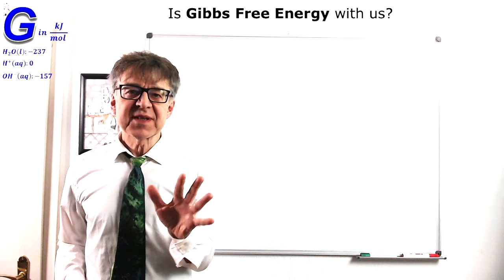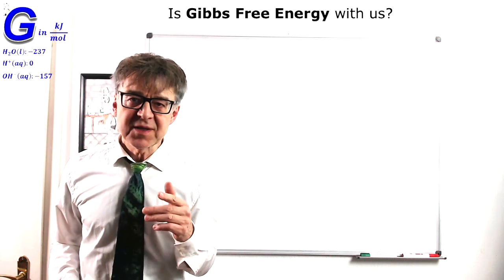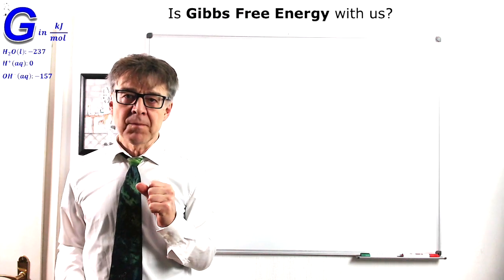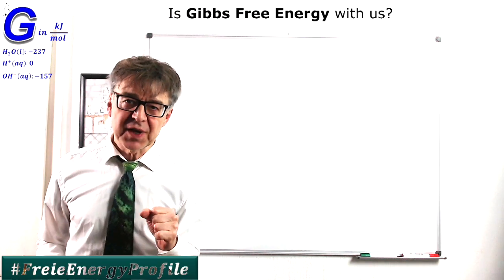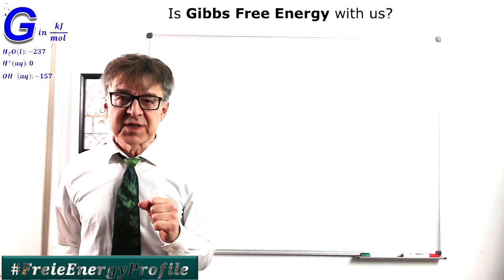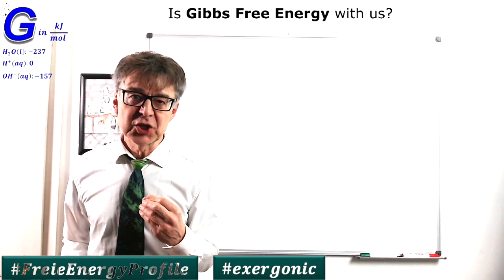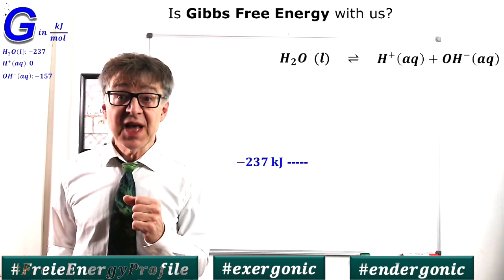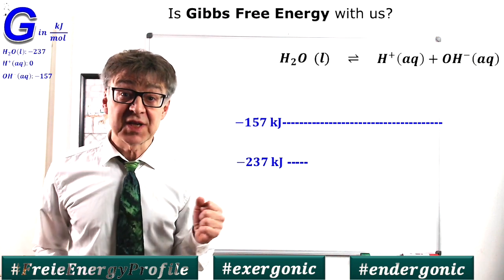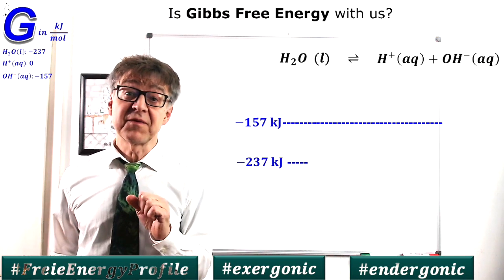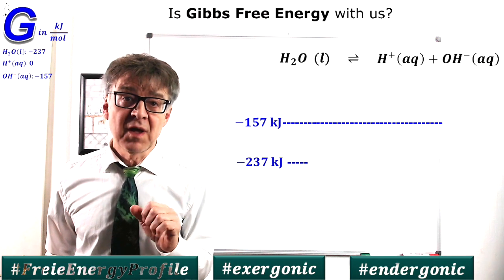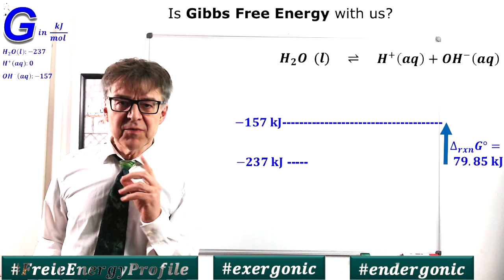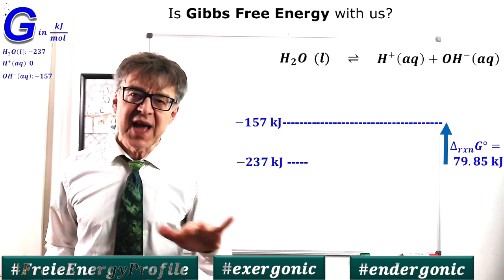We will now discuss one of the most important thermodynamic plots, namely the change in Gibbs-free energy during a reaction. How does instability change during a reaction? We start with the chemical potential of the reactant at negative 237 kilojoules and end up at the chemical potential of the products negative 157 kilojoules. So there is a clear upward trend in instability. Thus the reaction going to completion is excluded.